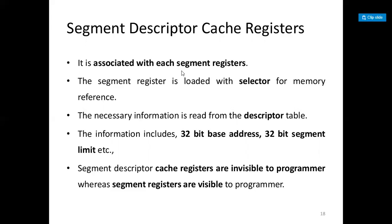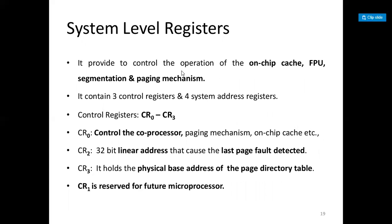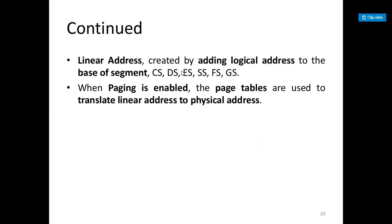The system level registers provide control for the on-chip cache, FPU, segmentation, and paging mechanisms. The control registers are CR0 to CR3: CR0 controls the co-processor, paging mechanism, and on-chip cache; CR1 is reserved for future microprocessors; CR2 holds the 32-bit linear address that caused the last page fault; CR3 holds the physical base address of the page directory table. When paging is enabled, page tables are used to translate linear addresses to physical addresses.